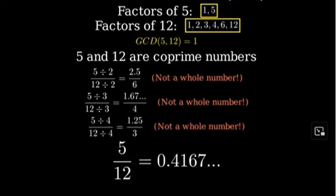If you're curious, as a decimal, 5 twelfths is equal to approximately 0.4167.